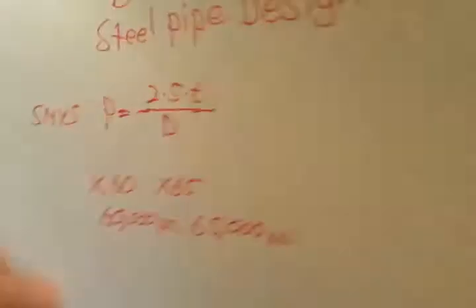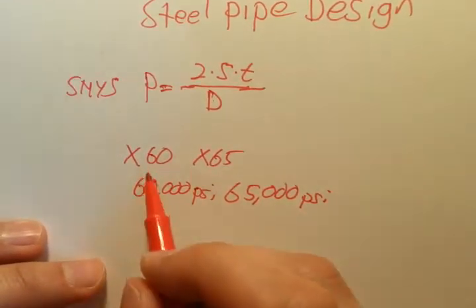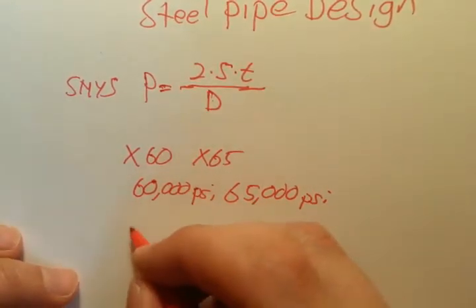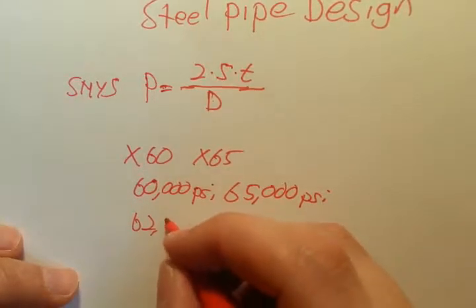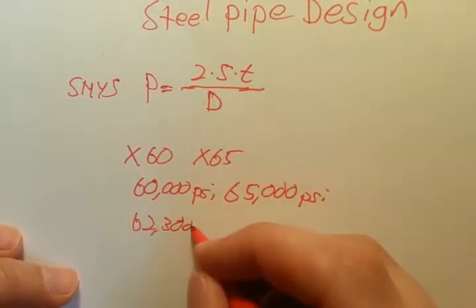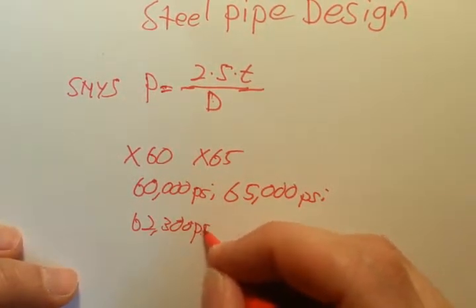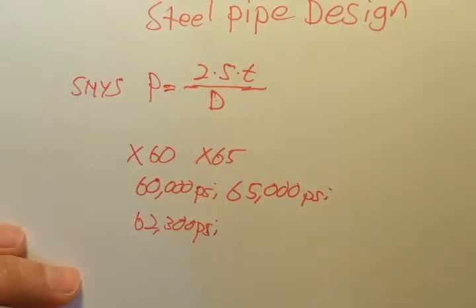They actually derate them, so an X60 pipe, the real yield strength will probably be something like 62,300, some more accurate number, and they'll just call it X60 plate just to be on the safe side.